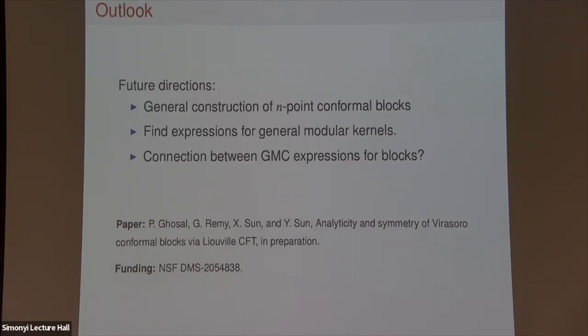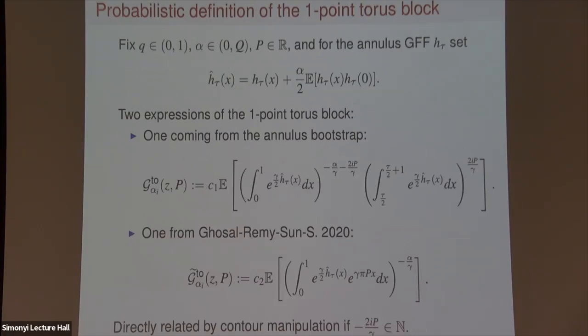One comment: in the two GMC expressions for the torus block, the p parameter in our previous work was inside the GMC itself. In the case where there is some sort of integrality of the parameter, we're able to explicitly show the relationship as a factor picked up in a contour shifting operation, since an integer number of these parameters are picked up. But it definitely does not make sense if you don't have an integral dimension of contours.